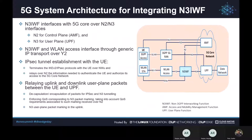The untrusted non-3GPP interworking function that integrates the 5G core network to Wi-Fi is shown here. There is a control plane interface to the access and mobility management function, or AMF, over N2. And then there is a user plane interface to the user plane function, or UPF, over N3. Other enhancements on the wireless LAN side are not in focus of our discussion today and are not shown here.